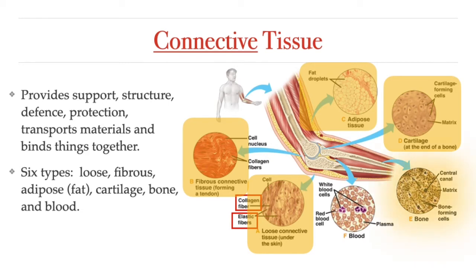Our bones are also considered a type of connective tissue. And finally, our blood is also considered a connective tissue — it is special because the cells in it are separated by fluid. So as you can see, connective tissues are extremely varied in both structure and function. They help attach body parts together, like attaching muscles to the bones, protect and cushion organs, transport materials and immune cells throughout the body, and store fat.